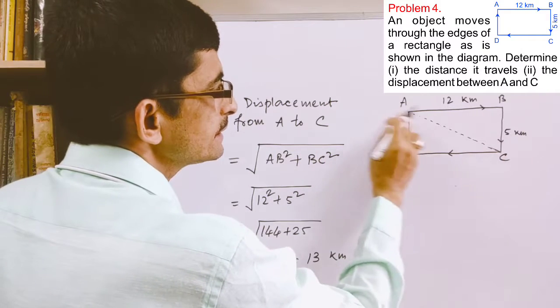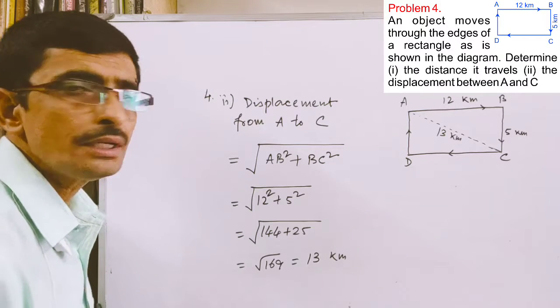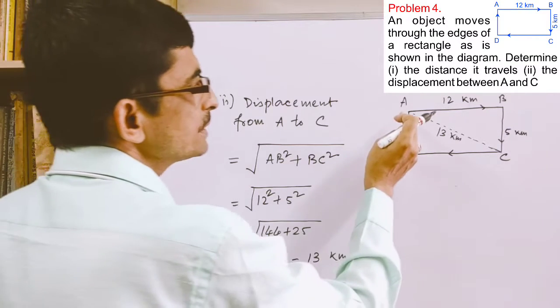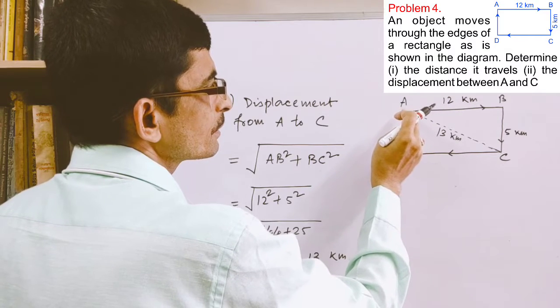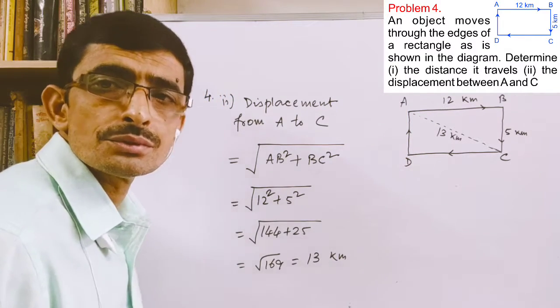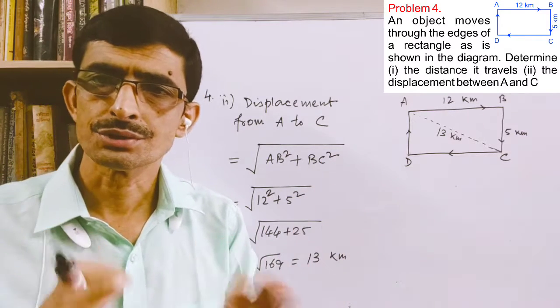This is 13 kilometers. This is how we find displacement. But if the question would ask what is the displacement when the object comes back to A, then you know in that case displacement would have been zero.